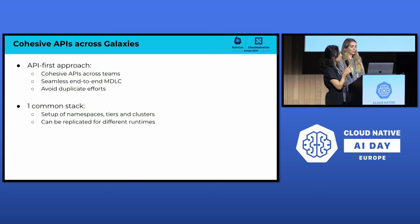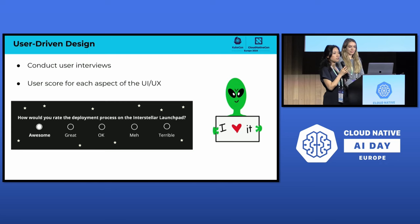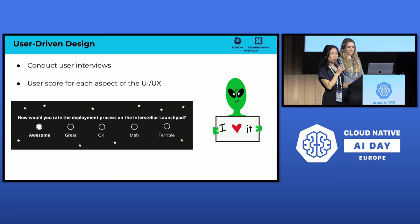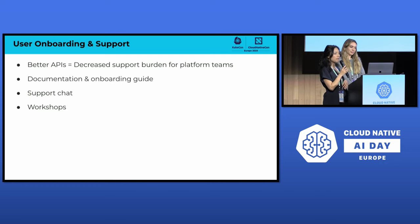Apart from the APIs, we also replicate the infrastructure underlying each runtime from one common stack with the same namespaces, tiers, and clusters. Our API design is mainly user-driven — we conduct user interviews before building new features and collect satisfaction scores after features roll out. According to surveys, our users think the deployment process is pretty awesome. With better APIs, we can decrease the support burden for our platform teams, while still providing up-to-date documentation, onboarding guides, and active support chat. Once or twice a year, we hold workshops to introduce new features and provide in-depth training.